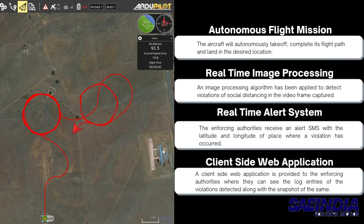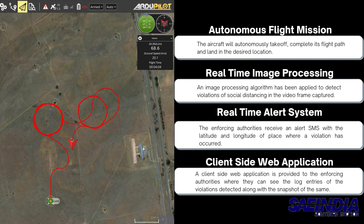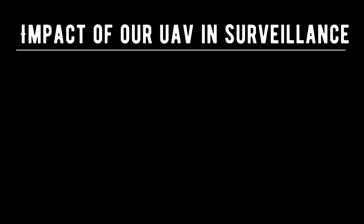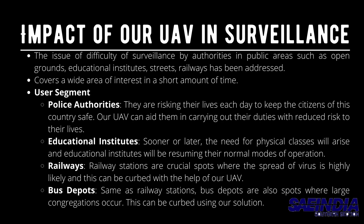The salient features of our solution include autonomous flight mission, real-time image processing to detect violation of social distancing protocols, and a real-time alert system where enforcing authorities receive a text SMS with the latitude and longitude of the violation area, along with a client-side web application where they can see log entries of all violations.